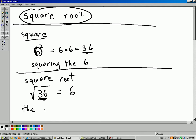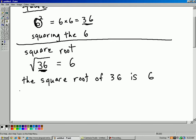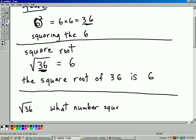So, you would say the square root of 36 is 6. In other words, you're just asking yourself the question one more time. Square root of 36. You're asking the question, what number, if you square it, gives you 36?